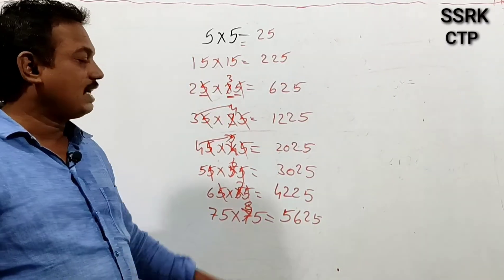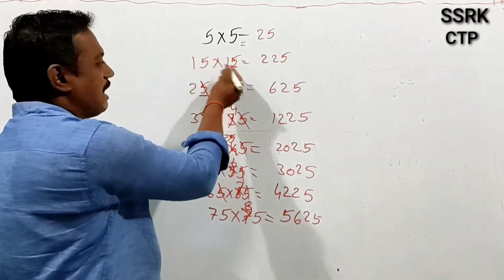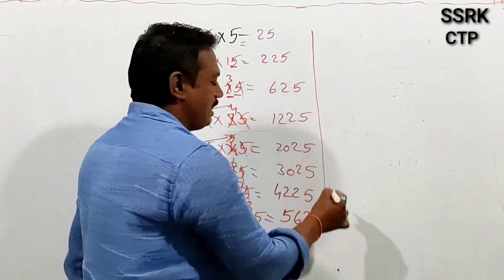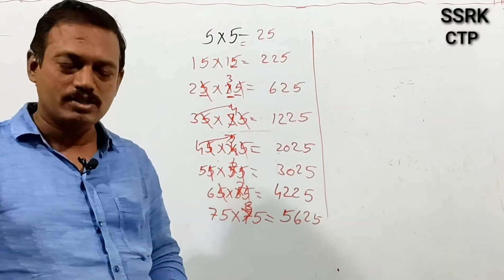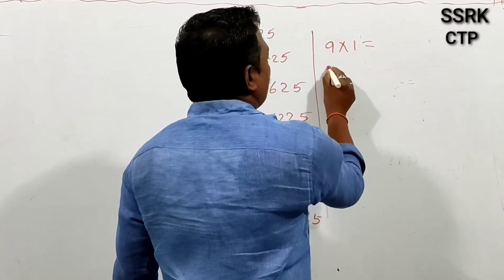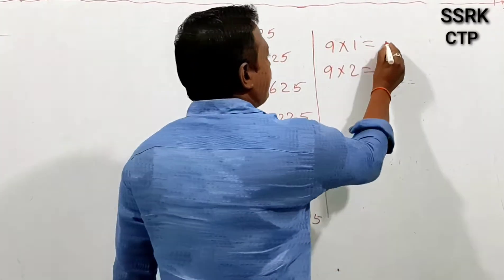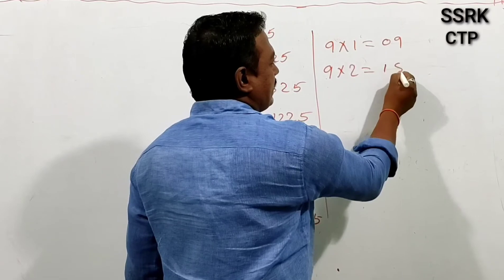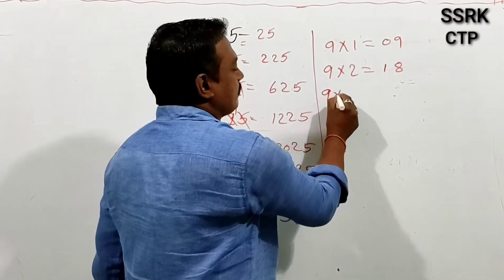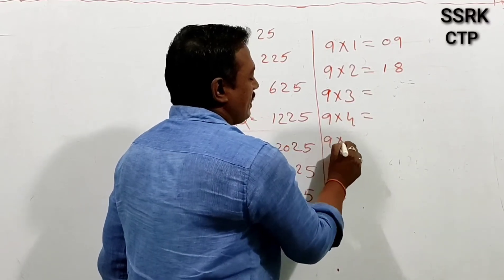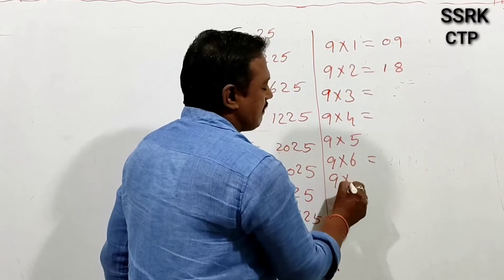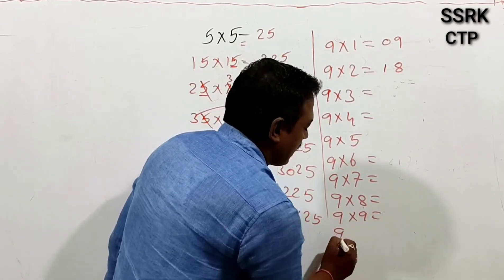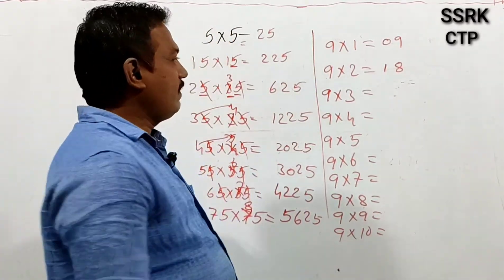Now, looking at the 9 times table. You can see the numbers follow a pattern: 9, 18, 27, 36, 45, 54, 63, 72, 81, 90. The digits go: 0, 9, 1, 8, 2, 7, 3, 6, 4, 5 — the tens digits increase 0,1,2,3,4,5,6,7,8,9 and the units digits decrease 9,8,7,6,5,4,3,2,1,0.